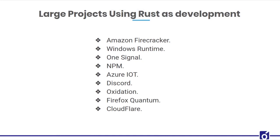Let's discuss some large projects using Rust. The first project is Amazon Firecracker — the virtualization technology that powers AWS Lambda, written completely in Rust. Firecracker started as a fork of Google's crosVM but quickly diverged. There are many common pieces best shared across projects and other virtual machine managers written in Rust.